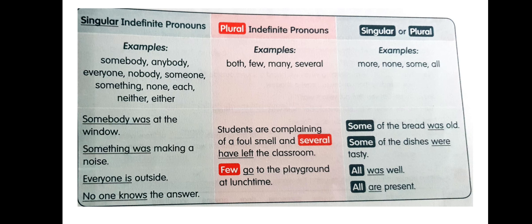In indefinite pronouns, you have two types: singular and plural, or both. For example, somebody, someone, none, each, neither, either, and nobody are examples of singular indefinite pronouns. Few, many, and several are examples of plural indefinite pronouns. As for pronouns that can be singular or plural — both — examples like more, none, same, and all fall into this category.